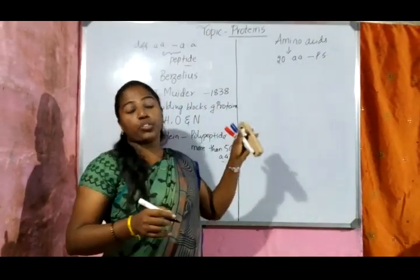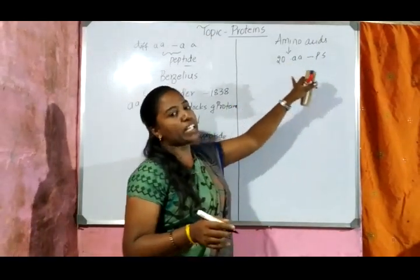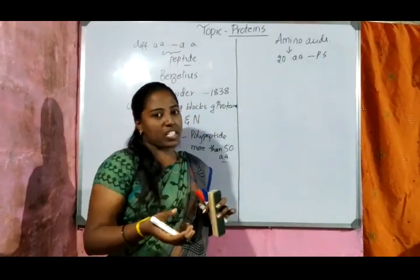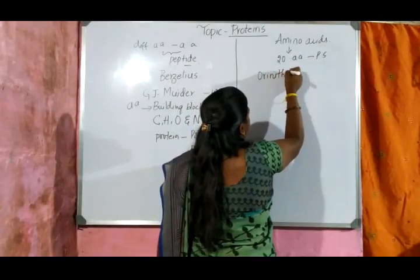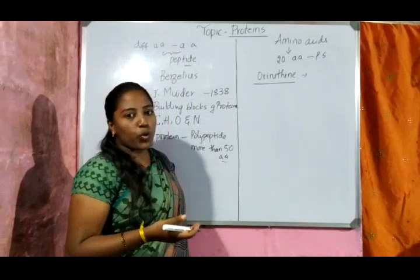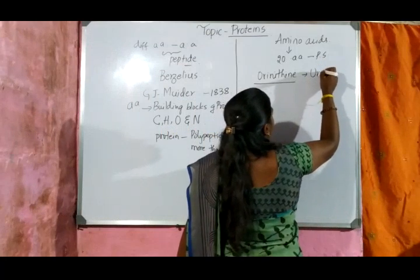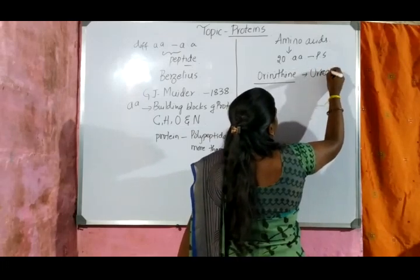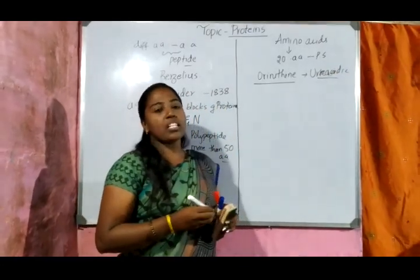There are nearly 200 to 300 different types of amino acids found in nature, but for protein synthesis we require only 20. For example, the amino acid ornithine is required for the urea cycle but it is not involved in protein synthesis.